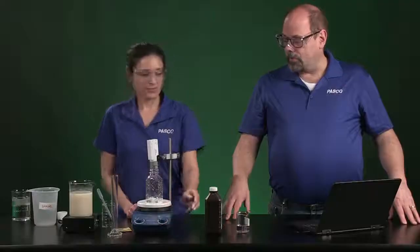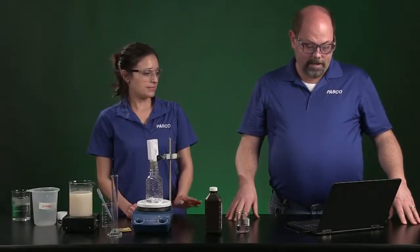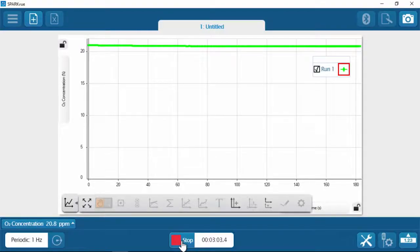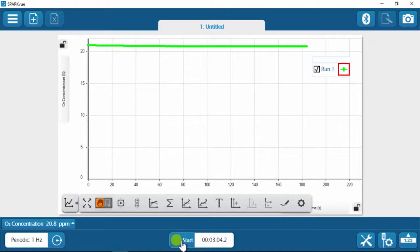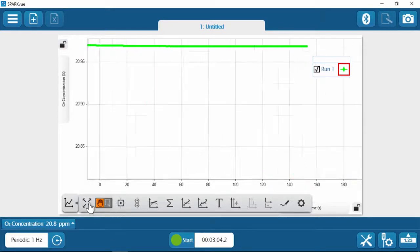Now that we've come to three minutes, we'll slow the stirring down. And we're going to stop the data collection. You're going to want to find out how much oxygen has been released in this reaction. And the easiest way to see some of these high and low points is to see it spread out using the scale to fit.